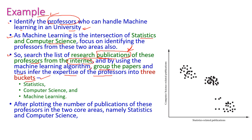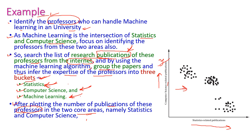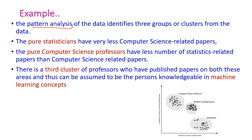Based on the papers, the cluster will group into three different groups: statistics, computer science, and machine learning. A professor may publish papers from the statistics discipline, or under pure computer science, or the combination of statistics and computer science. After plotting the number of publications in two core areas — x-axis is statistics-related publications and y-axis is CSE (computer science) related publications — these are the papers published by professors in a university. The clustering algorithm will analyze the patterns of those data and identify three different clusters.